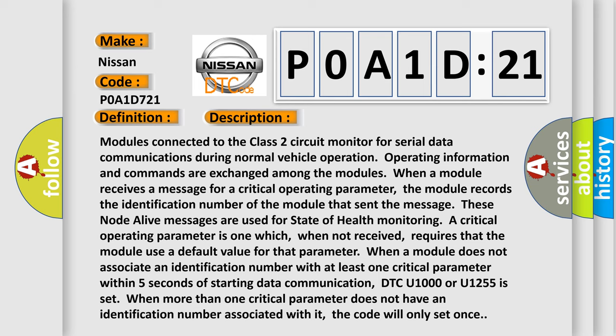Monitoring a critical operating parameter is one which, when not received, requires that the module use a default value for that parameter. When a module does not associate an identification number with at least one critical parameter within five seconds of starting data communication, DTC U1000 or U1255 is set. When more than one critical parameter does not have an identification number associated with it, the code will only set once.